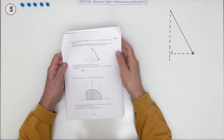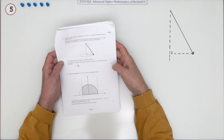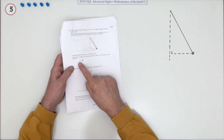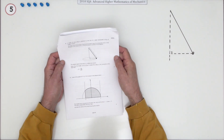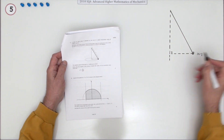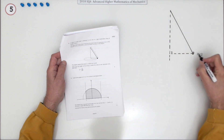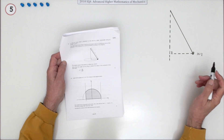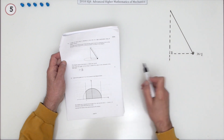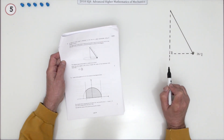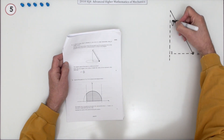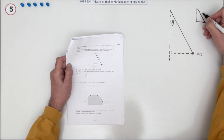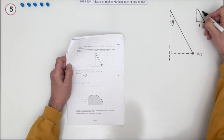Number five from the 2018 SQA Advanced Higher Mathematics Mechanics — five marks, conical pendulum. You have to derive the formula for the angular velocity. There's a body of mass m attached to one end of a light inextensible string of length l, spun in a horizontal circle so the string forms a conical pendulum. Given that the length of the string is double the radius, we can determine this angle from the triangle where this length is double that length.